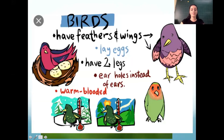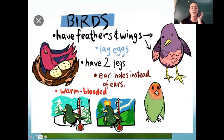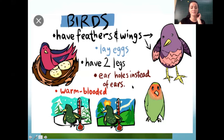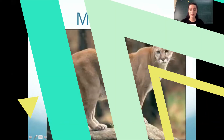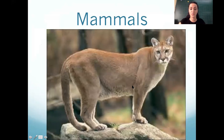Birds lay eggs, and they have ear holes — they don't have ears that stick out like us, they have ear holes. We went over mammals as well. Some characteristics we can observe include ears that stick out, like us.